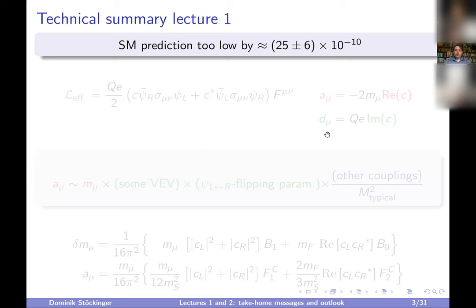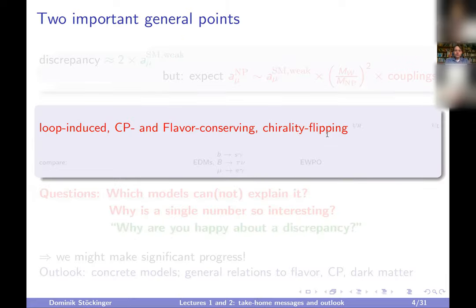The summary from the previous lectures: we started by saying that the standard model prediction is too low by 25 times 10 to the minus 10. This is a large deviation because it's larger than the standard model weak contributions. We need to take into account four special properties of g minus two: it is loop-induced, CP and flavor conserving, and chirality flipping. These complementary properties tell us how new physics models can contribute large amounts to g minus two while not being observable elsewhere — we need to go to specific parameter regions in those models which maximize those complementarities.